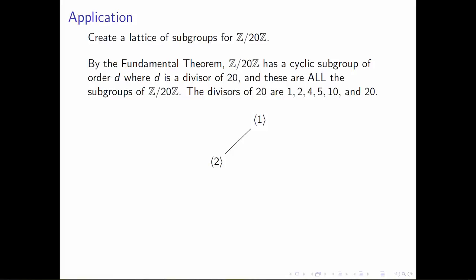To find all of the subgroups of ℤ mod 20, we need to list all of the divisors of 20, which is the order of the group. Those divisors are 1, 2, 4, 5, 10, and 20. I've started with the largest and I'm working my way down in size. I'm going to start with the largest group, the group of order 20 — that's all of ℤ mod 20ℤ — and that is the group generated by the number 1. It's the largest structure, so I draw it on top.